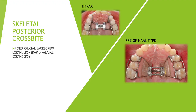For a skeletal posterior crossbite, when correcting with fixed palatal expanders — also called fixed jack screw expanders — the device is fixed and can only be removed by the doctor. The jack screw in the center expands the narrow upper arch, which is why it is in crossbite. This type is called the Hyrax or the rapid palatal expander of Haas type. The Haas type has an acrylic plate that helps gain anchorage from the palate.